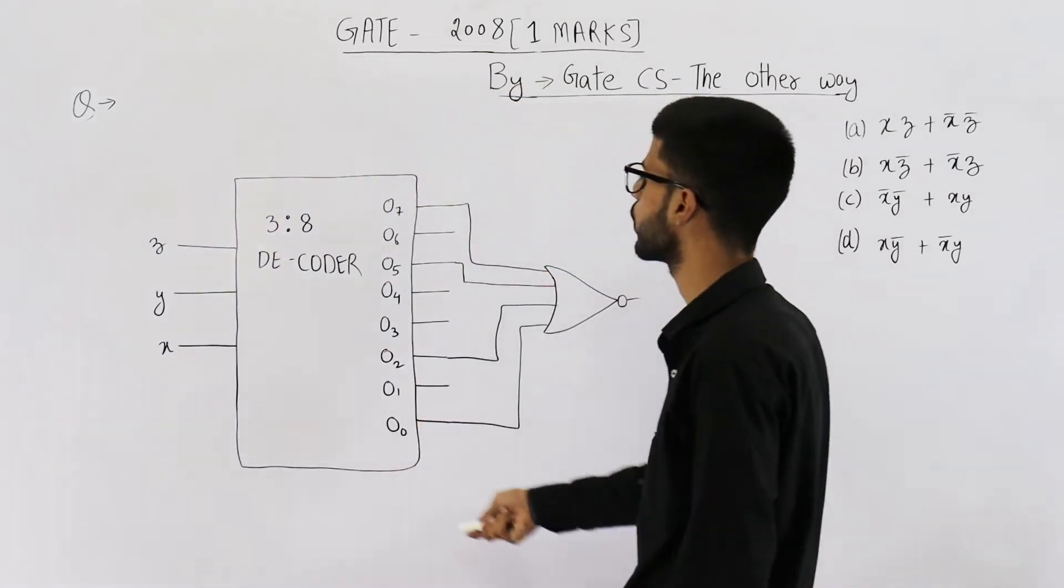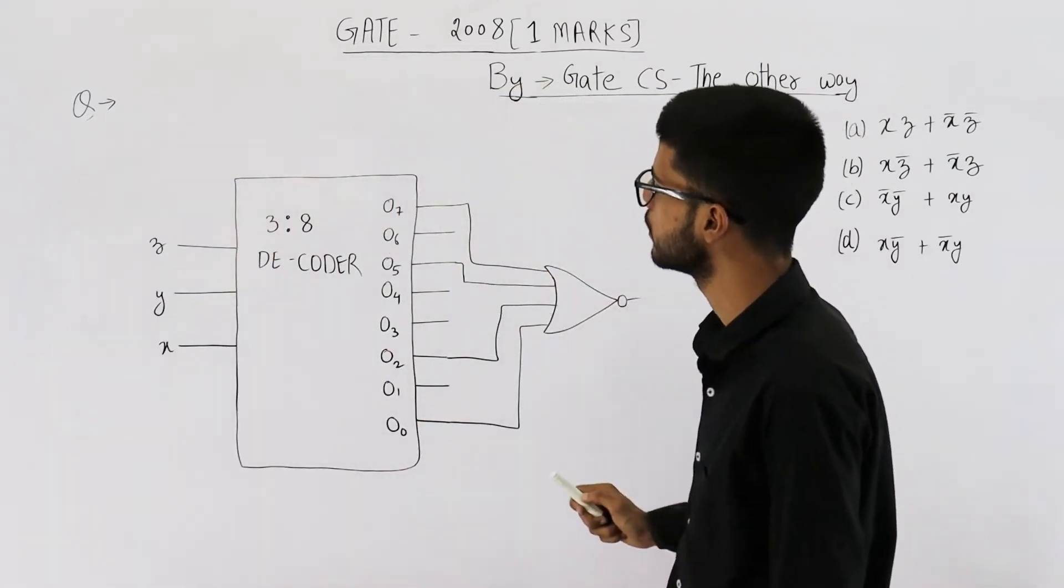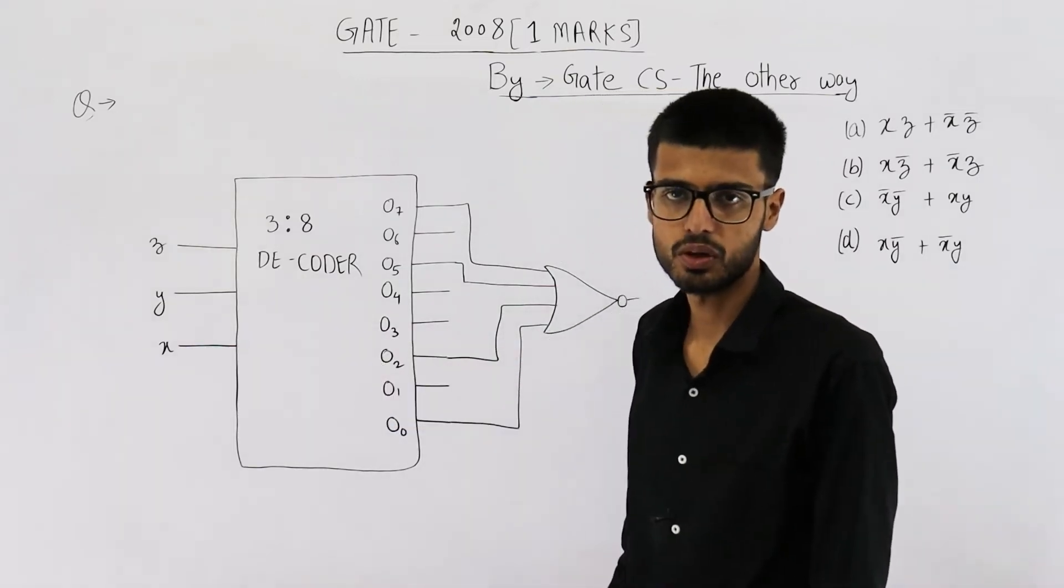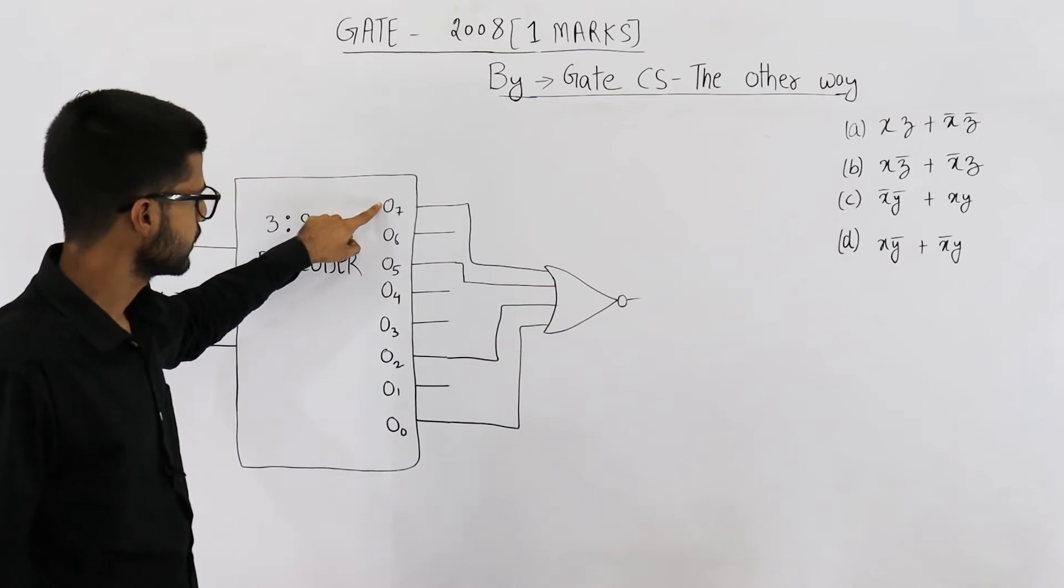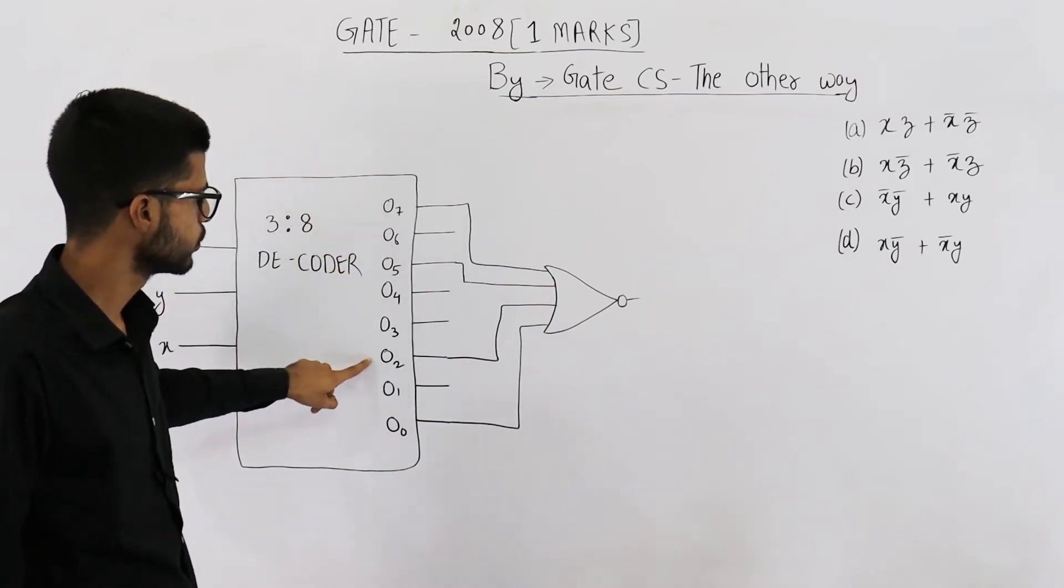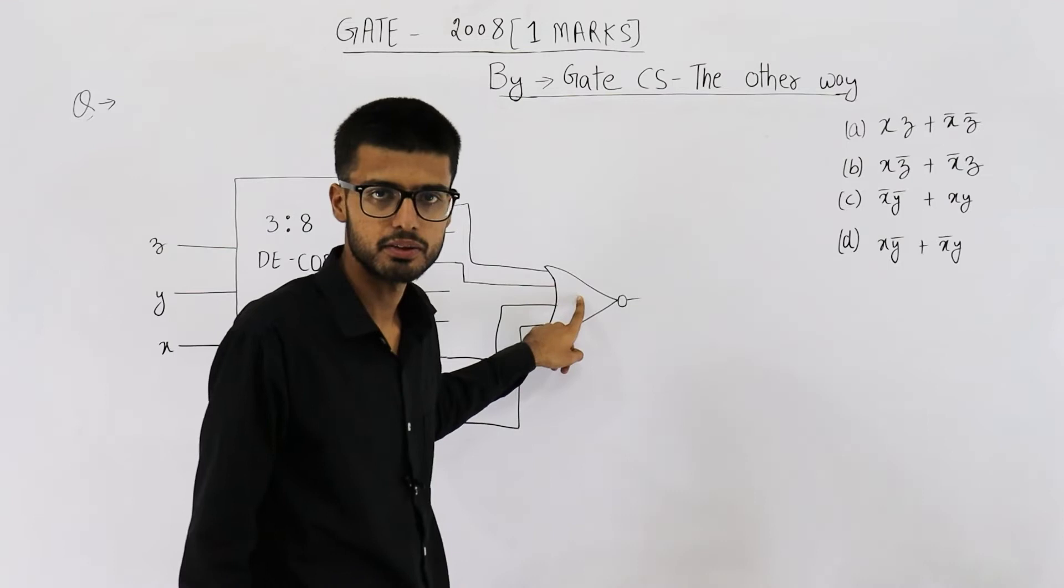We need to find the output of this circuit. You can see we have a 3 to 8 decoder. Its outputs number 7, 5, 2, and 0 are connected to a NOR gate.